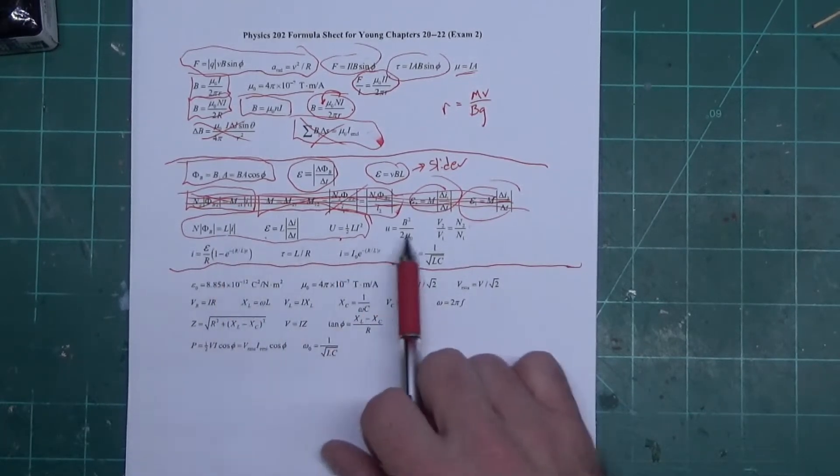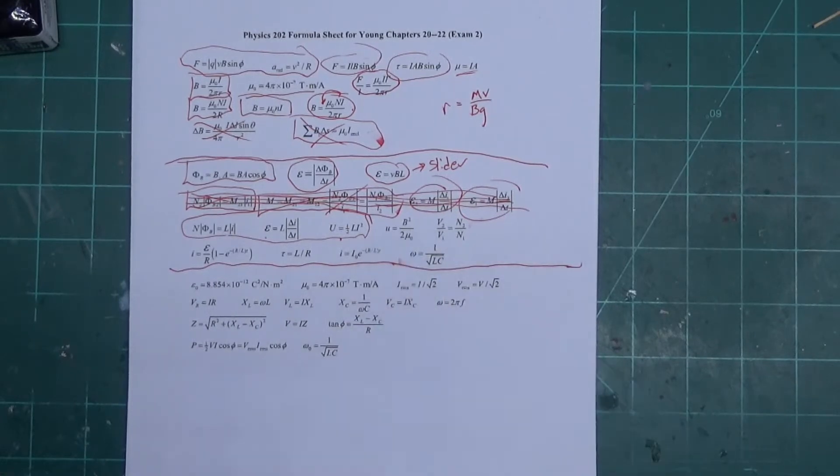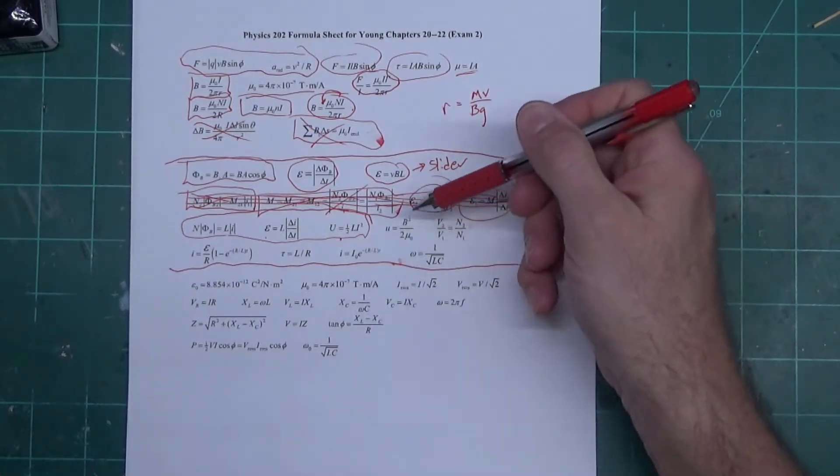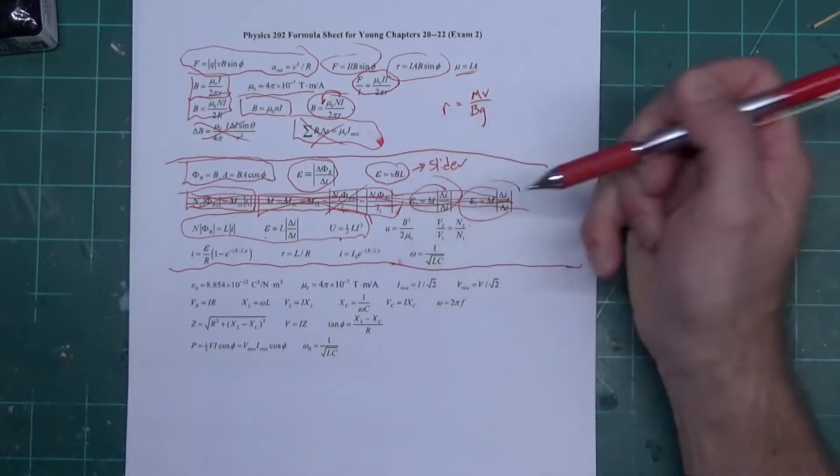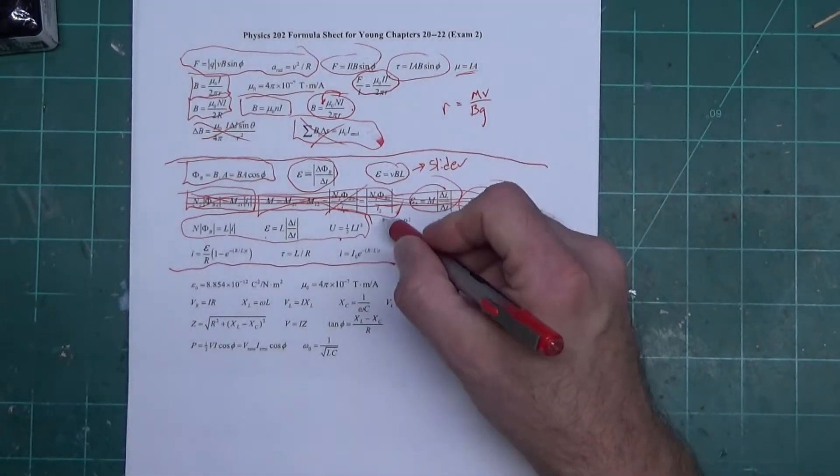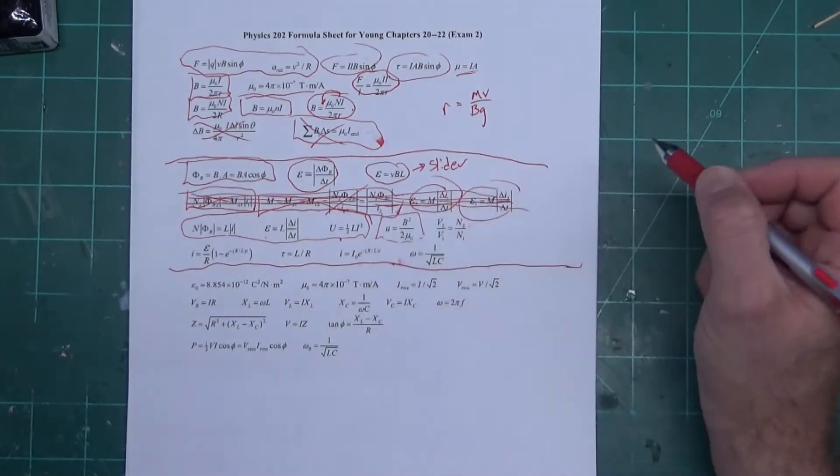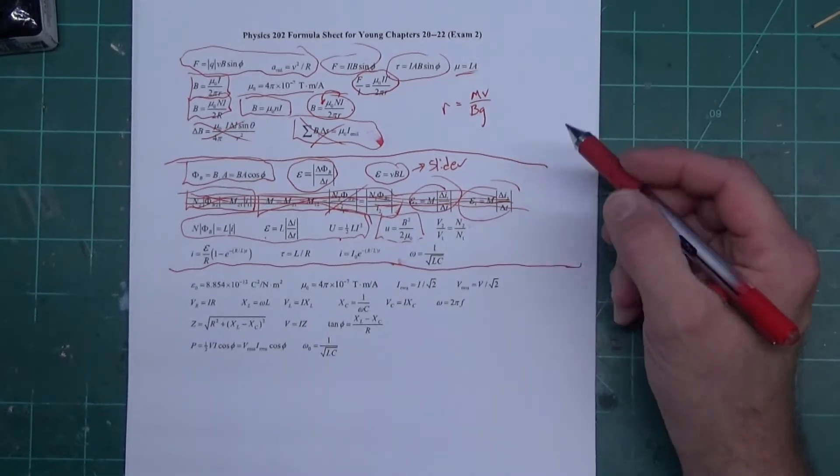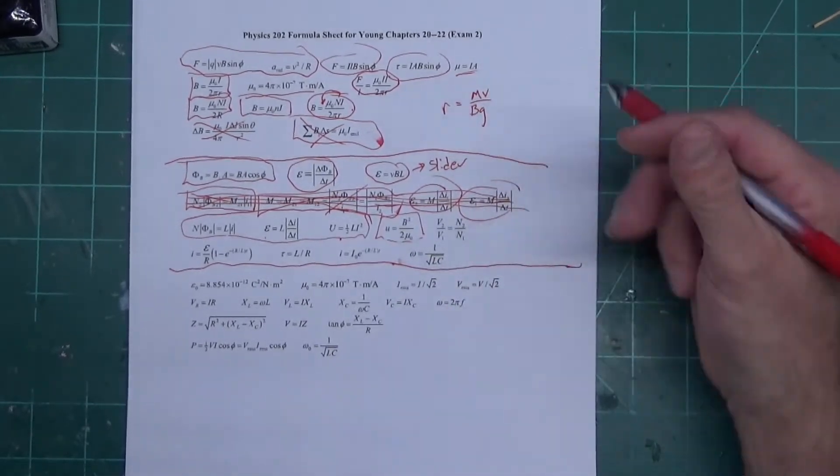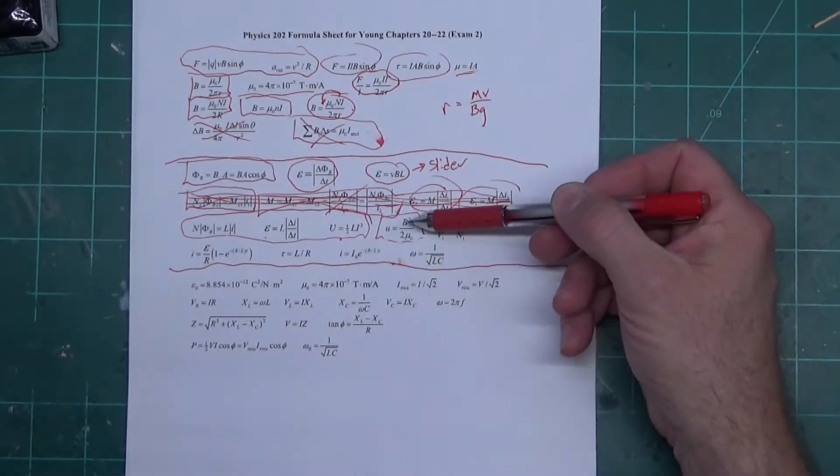Over here, this is energy density due to the magnetic field. In other words, this will tell you how much energy per cubic meter a magnetic field has. It's very rare for that to be on exam one - that's almost always on exam three.